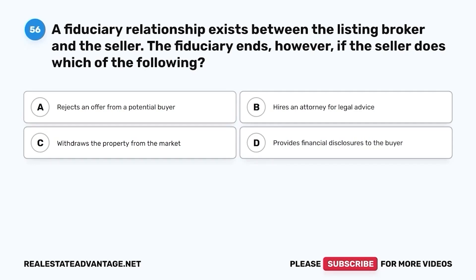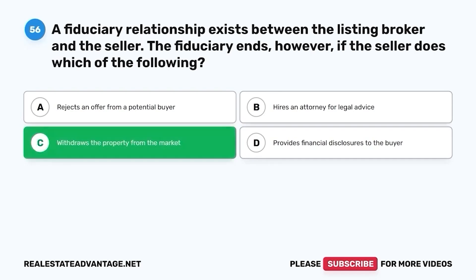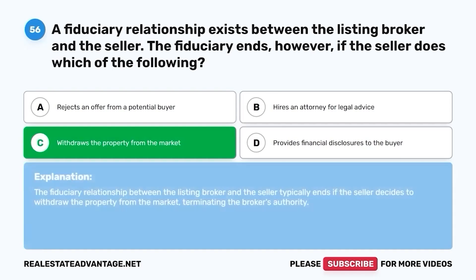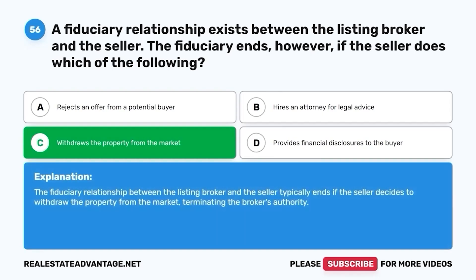Question 56. A fiduciary relationship exists between the listing broker and the seller. The fiduciary ends, however, if the seller does which of the following? A. Rejects an offer from a potential buyer. B. Hires an attorney for legal advice. C. Withdraws the property from the market. D. Provides financial disclosures to the buyer. The correct answer is C. The fiduciary relationship between the listing broker and the seller typically ends if the seller decides to withdraw the property from the market, terminating the broker's authority.